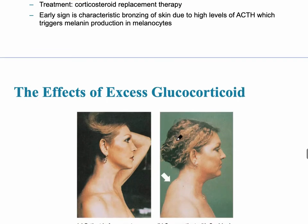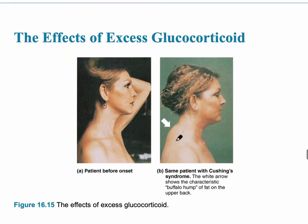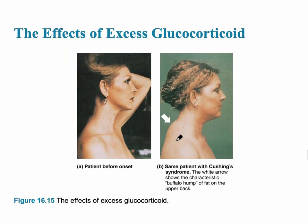The next slide shows Cushing's disease. A patient before onset is shown on the left in panel A, and panel B shows the same patient with Cushing's syndrome. You can see the characteristic buffalo hump on the back of the neck and fatty deposits also in the face.